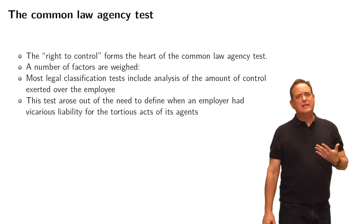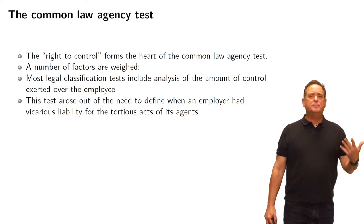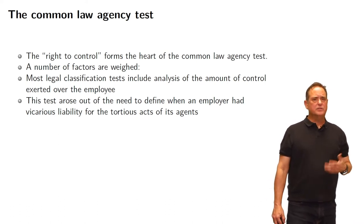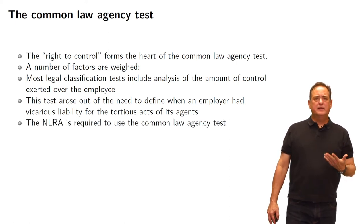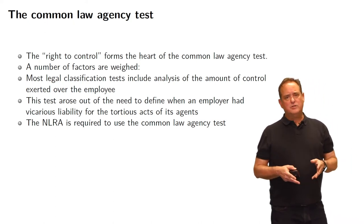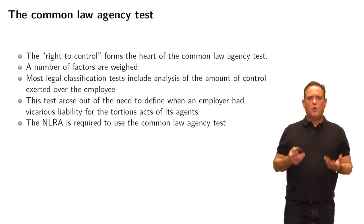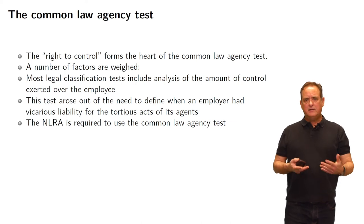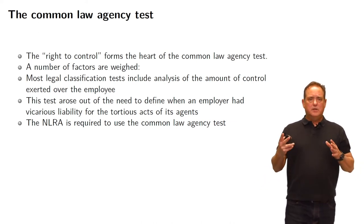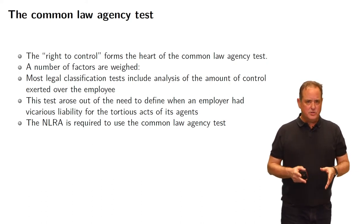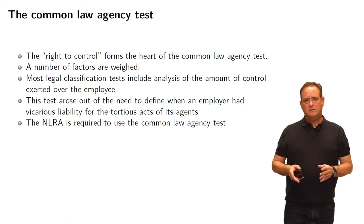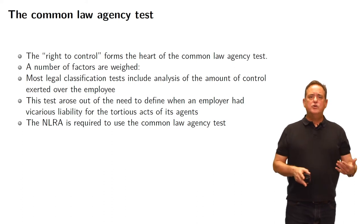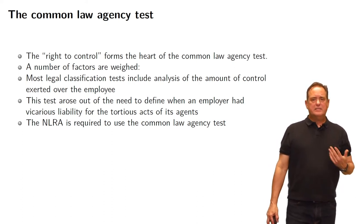The right of control test originated from the idea of when an employer is liable for the vicarious, tortious acts of its employees. But now it has expanded. This is the test used for the National Labor Relations Act. The NLRA requires courts to use the common law agency test. So in any dispute about union activity, union organizing, or union representation, the NLRA requires determining whether a person is an employee — with the right to union organizing — or an independent contractor without those rights, using the common law agency test.